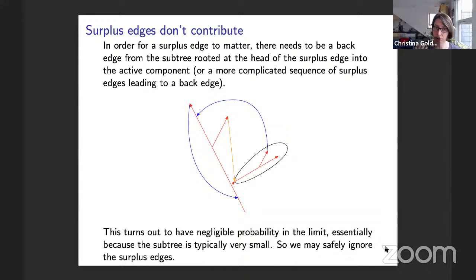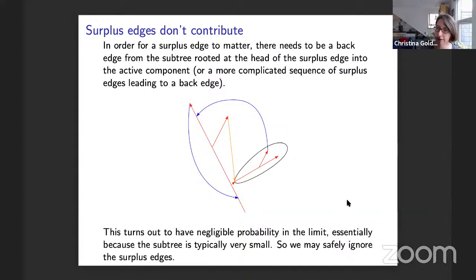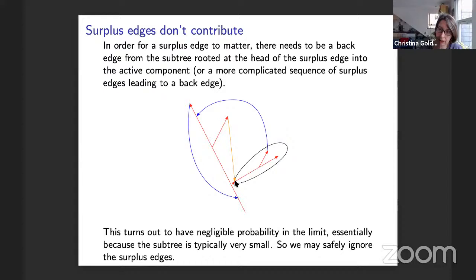Surplus edges don't contribute in the limit. For a surplus edge to matter, you'd need a back edge from the subtree rooted at the head of the surplus edge into an existing strongly connected part. This requires too many low-probability events to conspire: the subtree at the head of the surplus edge is not size-biased, so it's typically very small and has a low chance of connecting into any strongly connected parts already generated. In the limit we can safely ignore surplus edges.